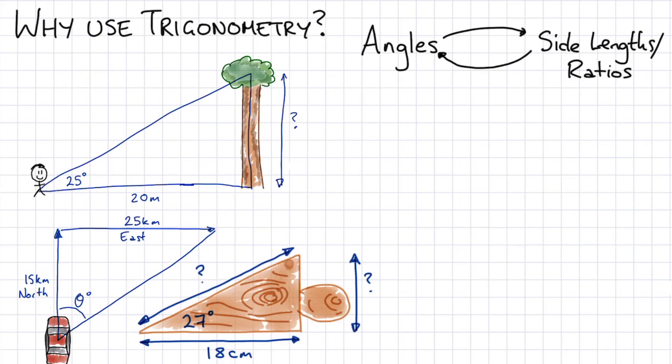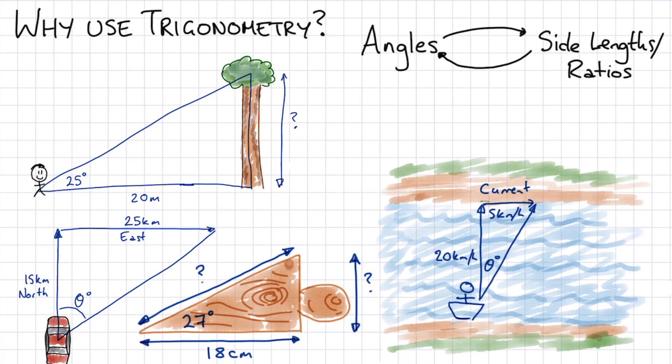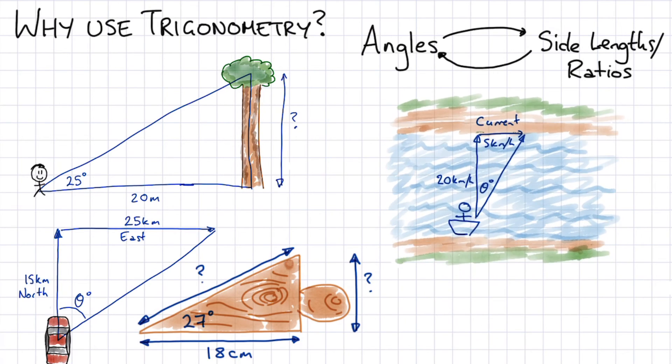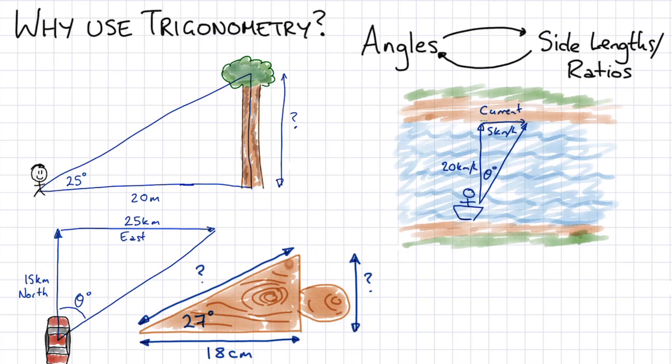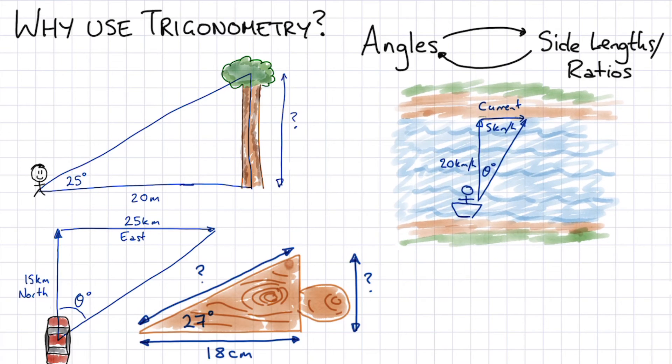The third one here might be you're a carpenter or an industrial designer or that kind of thing. You're making a doorstop and you've got a 27 degree angled doorstop. You've got 18 centimeter length. So what might be the hypotenuse and the opposite side for that particular doorstop?